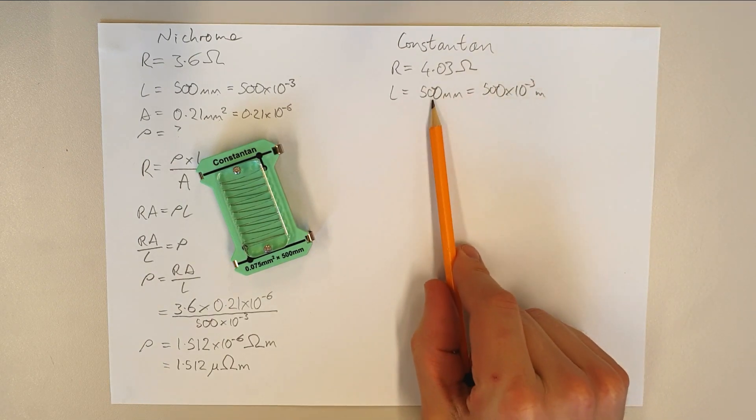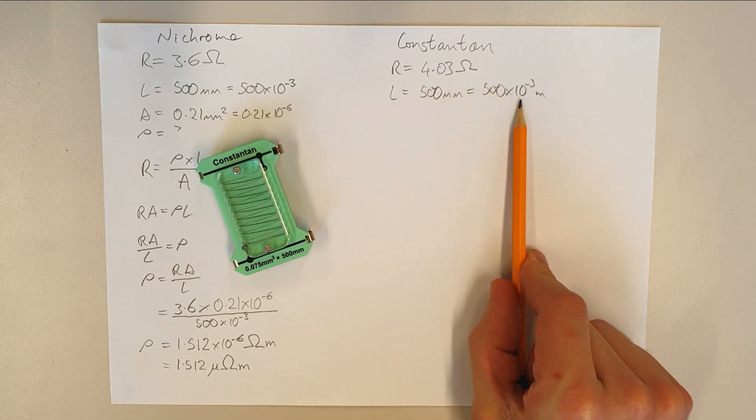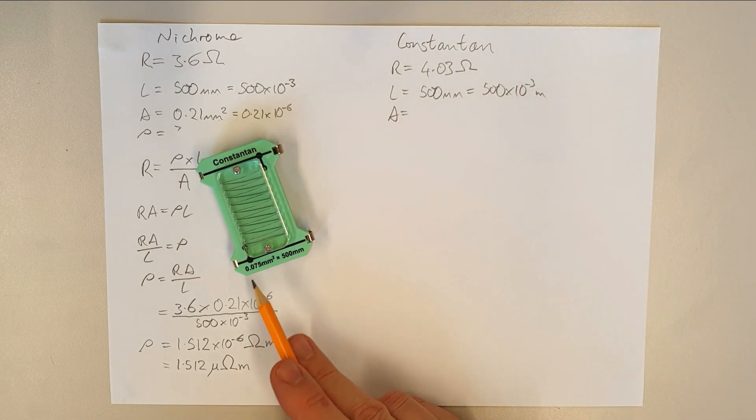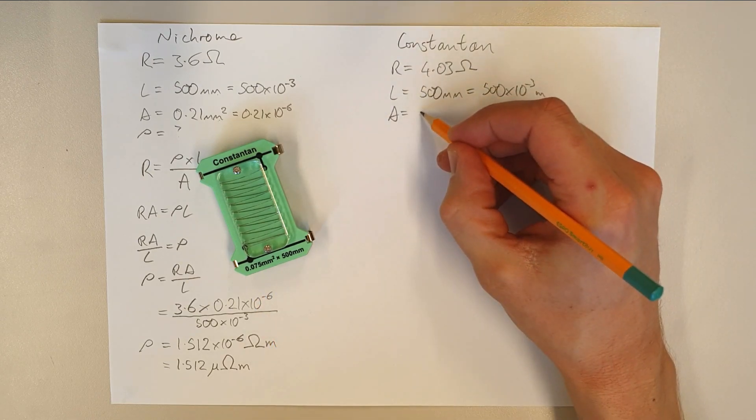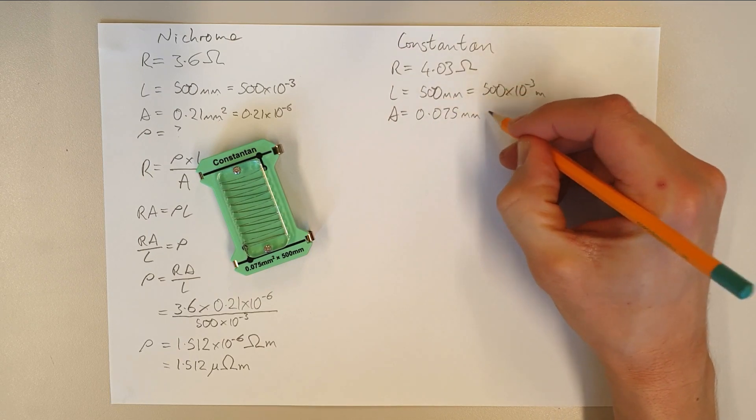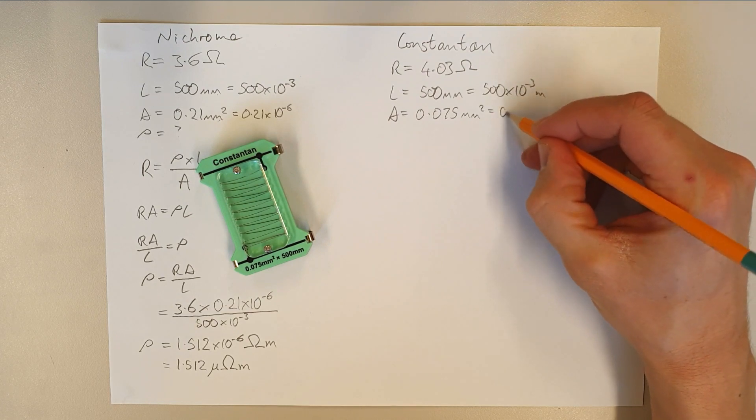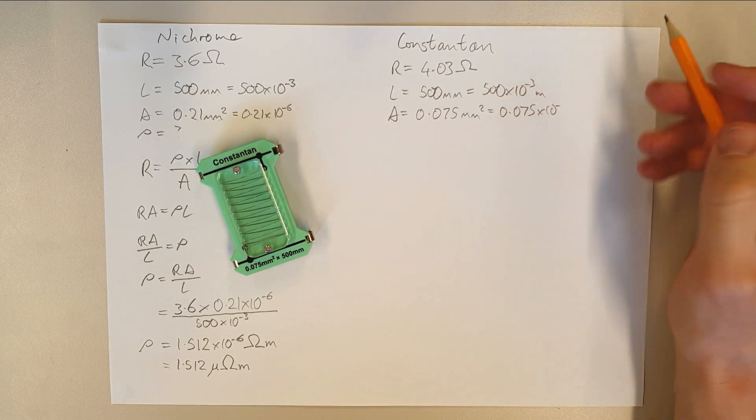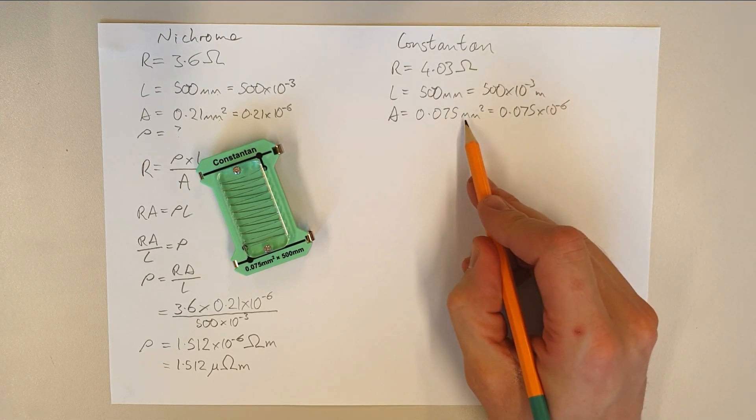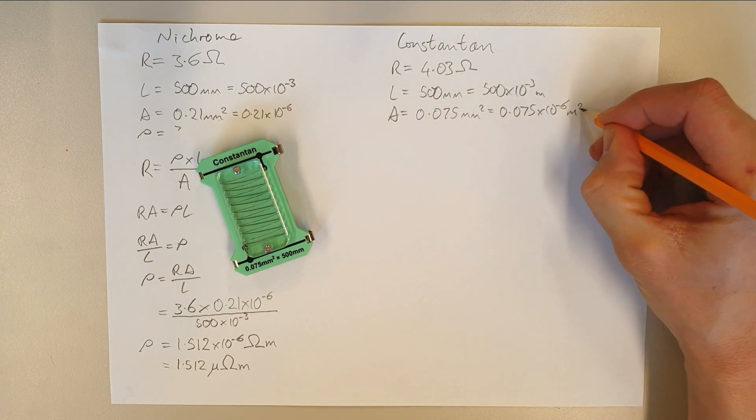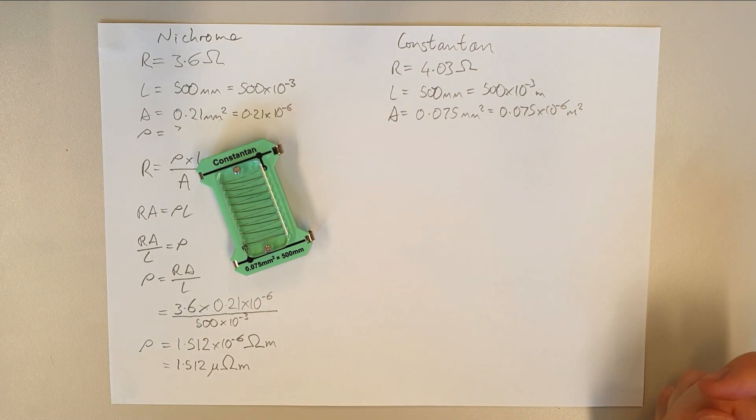Again, it's worth reiterating at this point that this value and this value represent exactly the same amount of length. We've just changed the way that we've expressed it. The cross-sectional area of our conductor is 0.075 millimeters squared. So that's 0.075 millimeters squared, which is equal to 0.075 times 10 to the minus, don't forget it's minus 6, because we're dealing with millimeters squared, not millimeters. And therefore that is the value in meters squared. So a very thin conductor indeed.